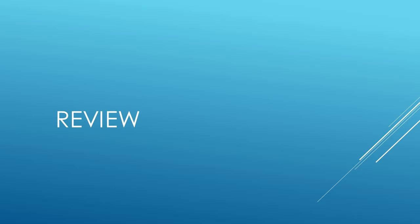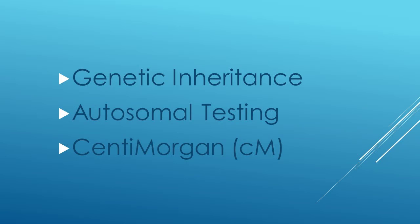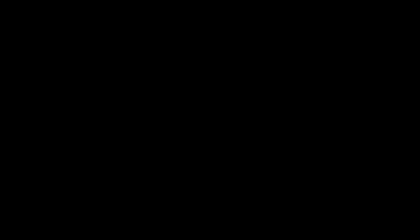Let's review what we've learned about understanding DNA matches. We get our DNA through a process called genetic inheritance, wherein we inherit one set of chromosomes from our mother and one from our father. Autosomal testing is used by commercial DNA companies and analyzes the autosomes or numbered chromosomes. And finally, these commercial DNA tests measure your genetic relationship to other testers by comparing your centimorgans. That concludes our presentation on understanding your relationship to DNA matches after autosomal testing.